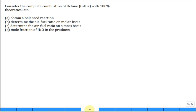Consider the complete combustion of octane, C8H18, with 100% theoretical air. Obtain a balanced reaction, determine the air-to-fuel ratio on a molar basis, then on a mass basis, and the mole fraction of water vapor in the products.